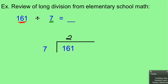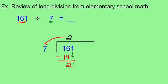So what we do is we multiply 7 times 2, we get 14, and then we always subtract that number. So 16 minus 14 is 2, and then we bring down the 1, and then we say how many times does 7 divide into 21?